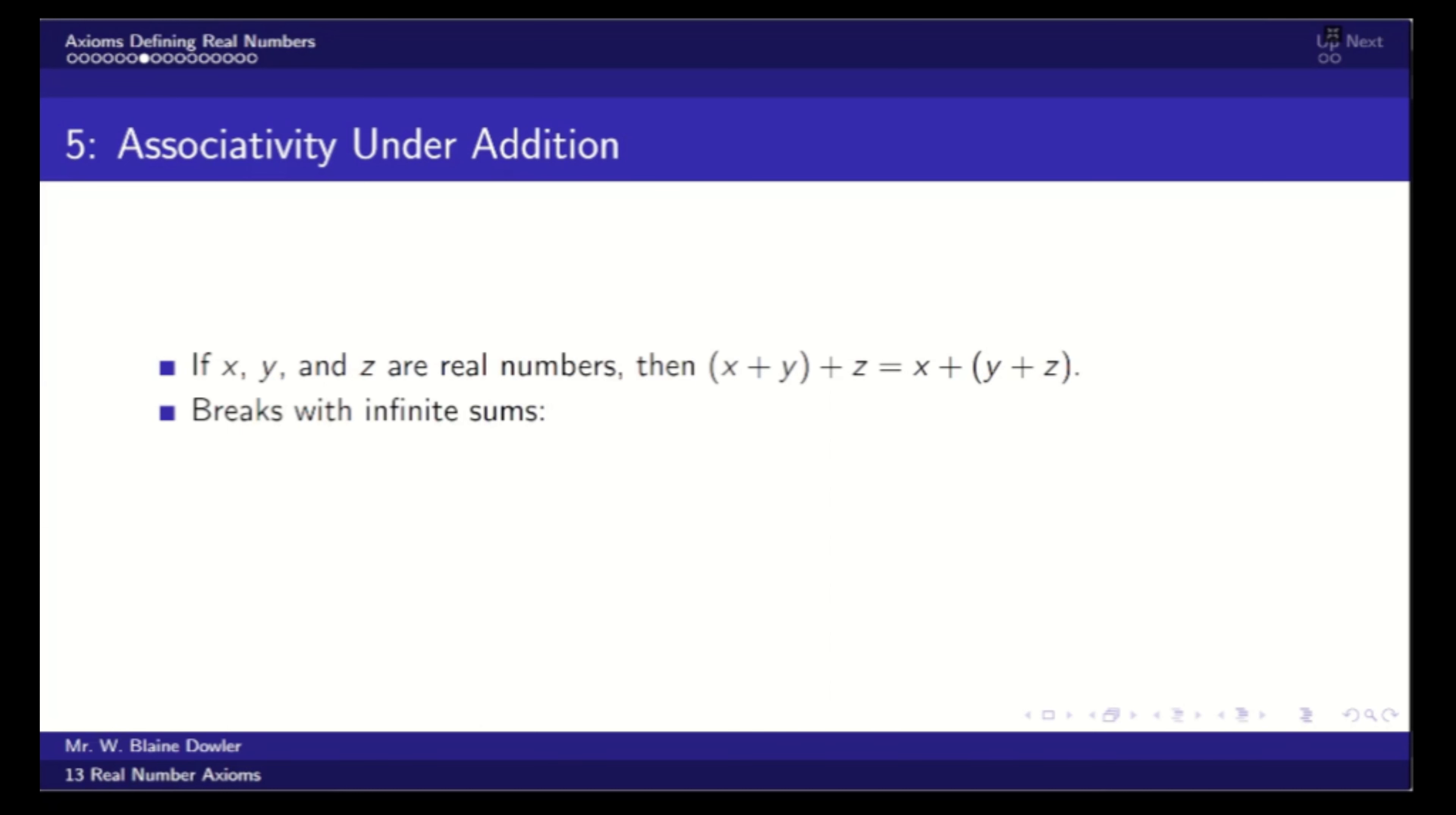We can actually break this axiom if we go to infinite sums. So if we have one minus one plus one minus one plus one minus one and continue that on to infinity, if we group them as one minus one plus one minus one, then we're adding a bunch of zeros and it seems the infinite sum is zero. If we take that same sum and group it differently, where we leave that first one isolated and then start pairing them off, we'll have one plus infinitely many zeros, so the whole thing adds up to one. These are two different results. So we cannot assume associativity holds under addition if our sum is infinite. That's worth noting, because we will be taking infinite sums in calculus.